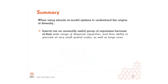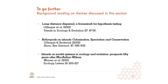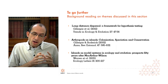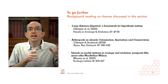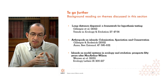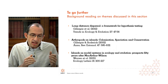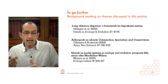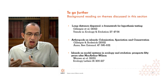To summarize this part, when using islands as model systems to understand the origins of diversity, insects are an unusually useful group because of their wide range of dispersal capacities and their ability to speciate at very small spatial scales as well as much larger ones. Background literature is provided to develop the topics covered in this section. I'm now going to leave you to read the methods section, and then I'll come back for part three of this session with another video.